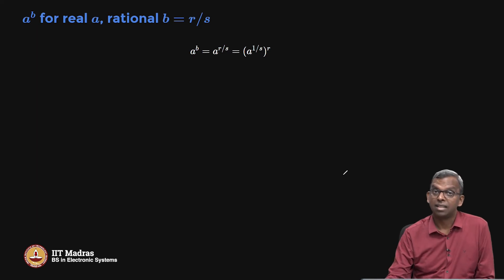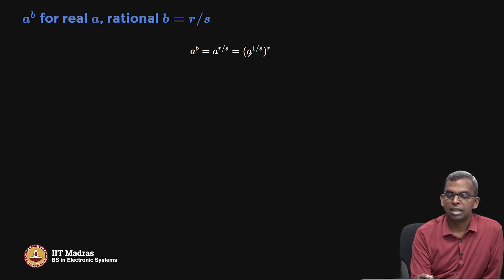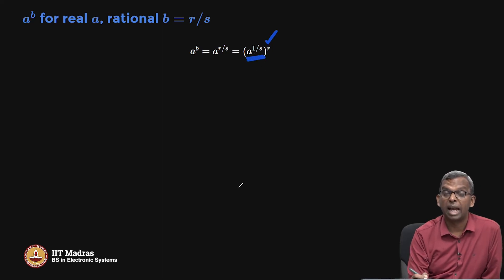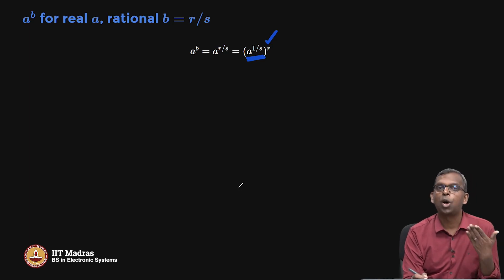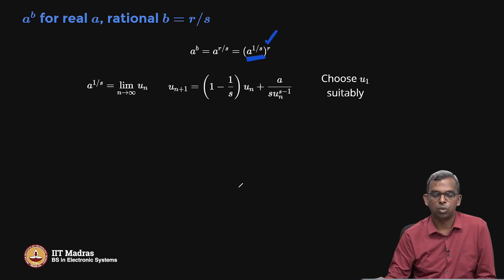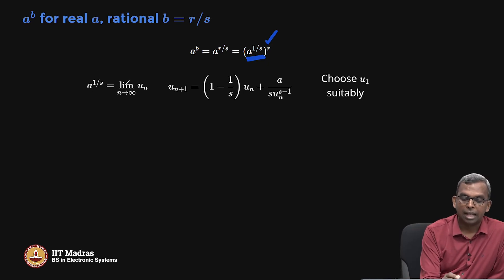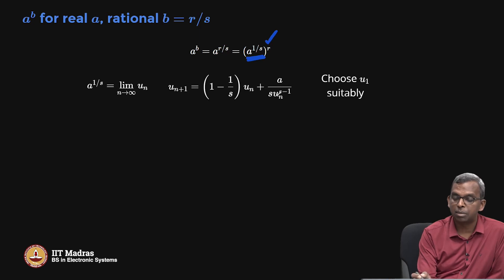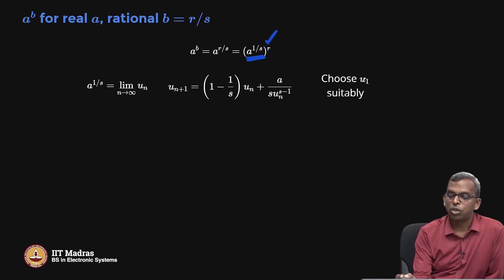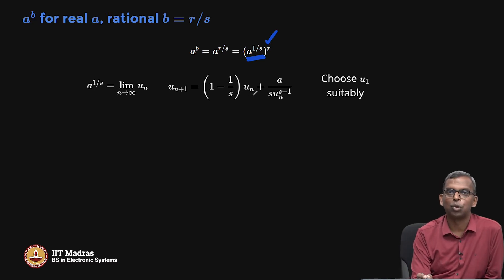When you have a rational number r/s, the trick is: a^b equals a^(r/s), which is the same as (a^(1/s))^r. Raising to the power r I can handle. The part where I have to raise to the power 1/s — computing the s-th root of a — is where it gets interesting. But I know how to do the s-th root of a using a recursive formula. I can write a^(1/s) as the limit of a sequence u_n defined by that recursion. When a is rational, this becomes a sequence of rational numbers.